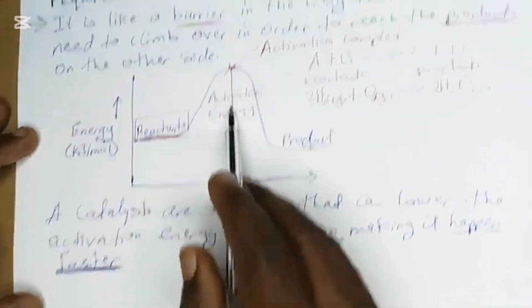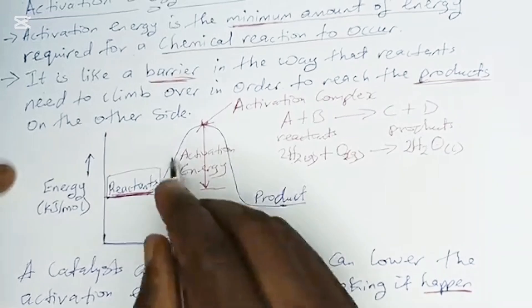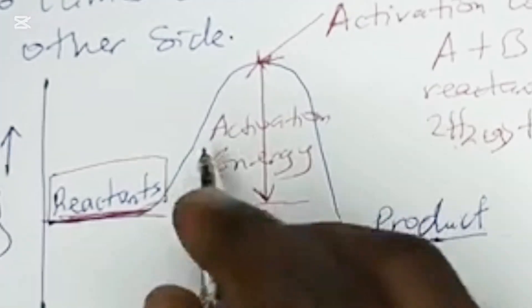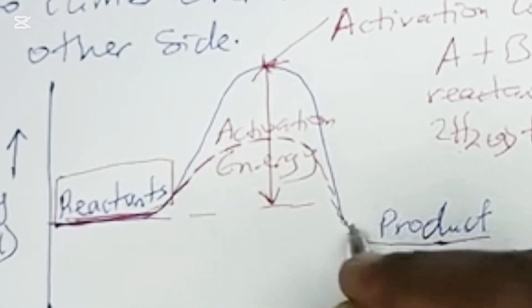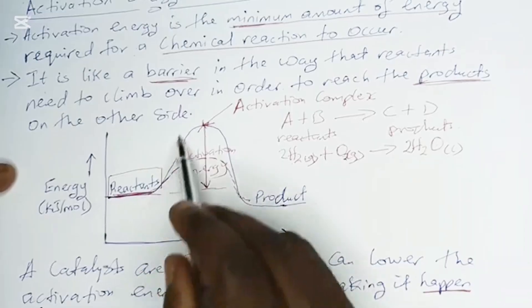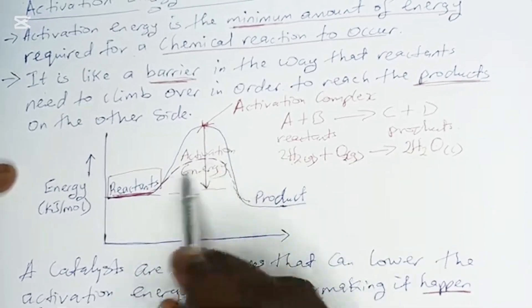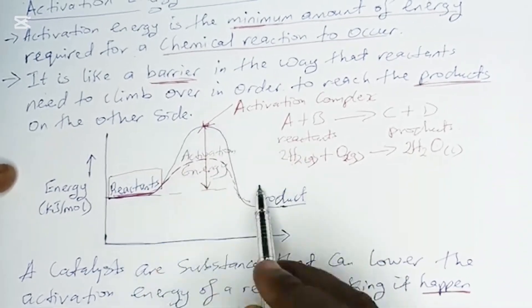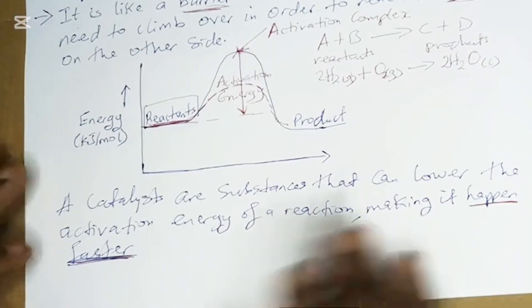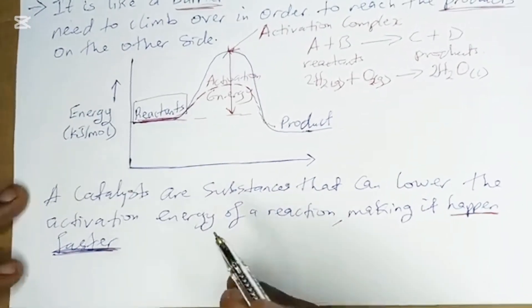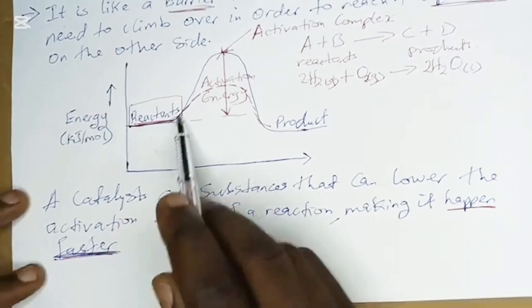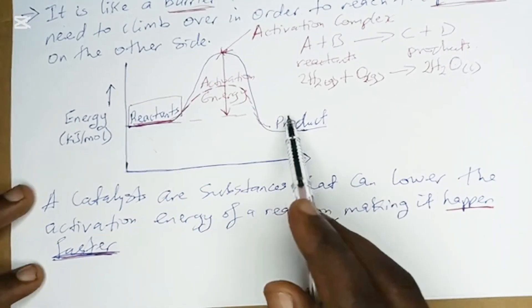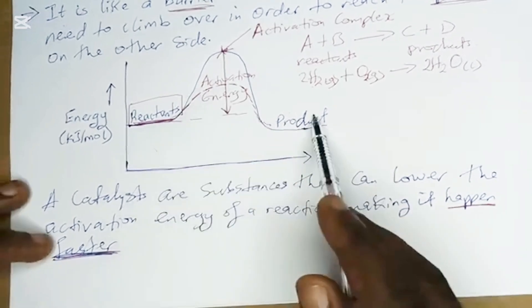What does the catalyst do to the activation energy? It reduces this mountain — the barrier — and creates a new, lower pathway. Assuming a car has to climb this big mountain while another car climbs a smaller one, the second one gets there faster. That's what a catalyst does: it lowers the time for the reactant to reach the product.